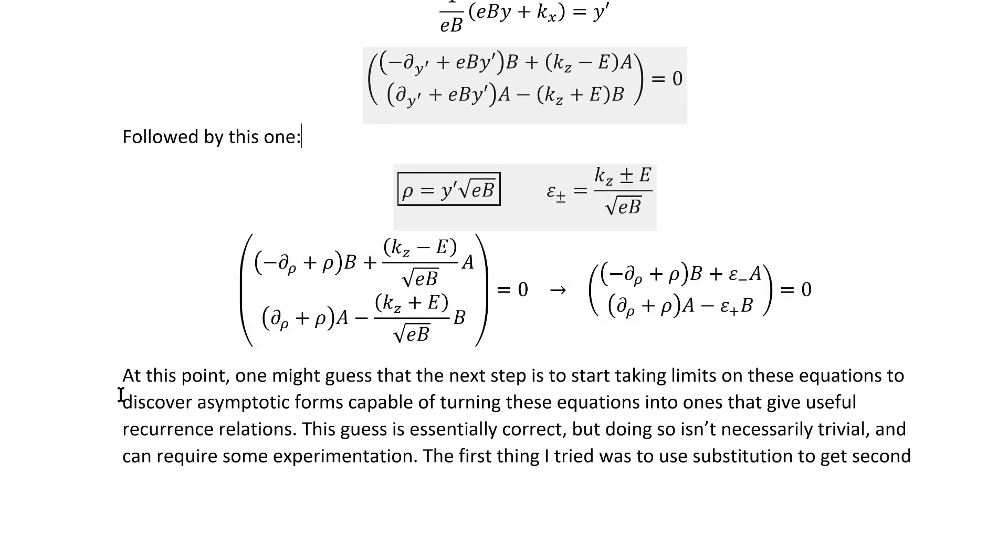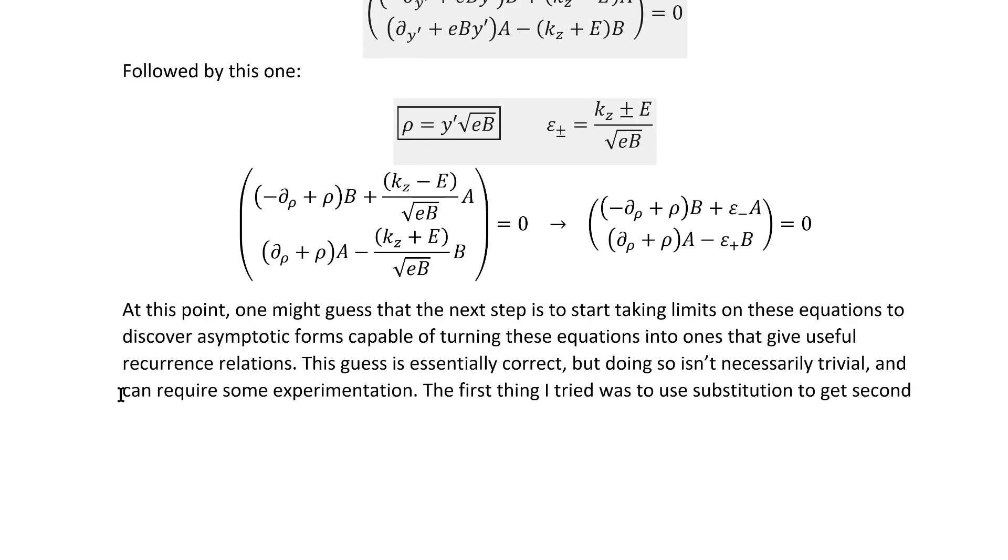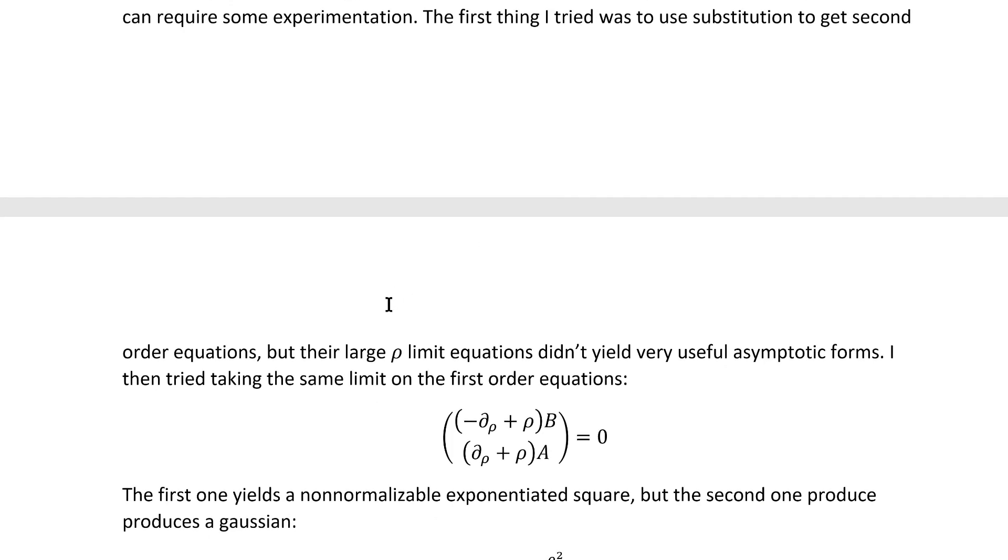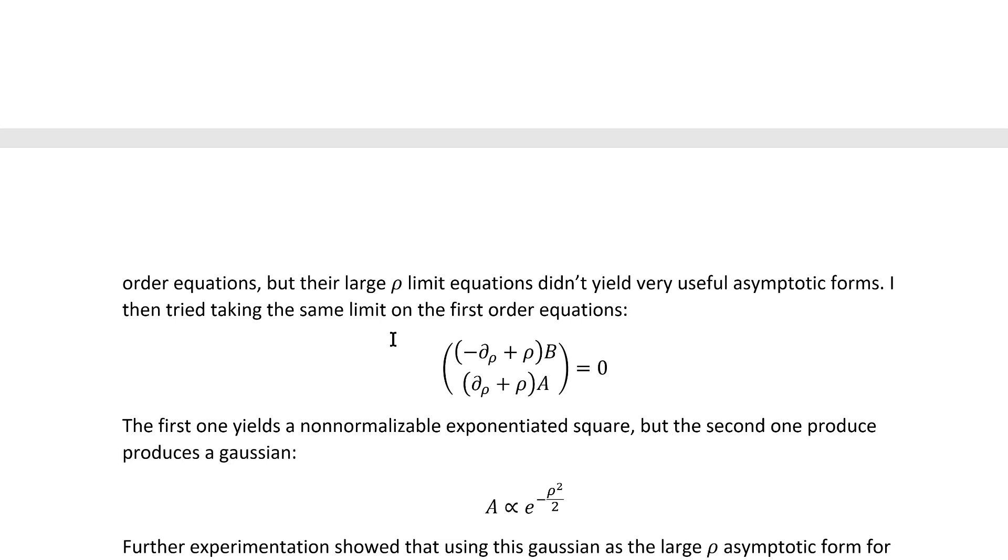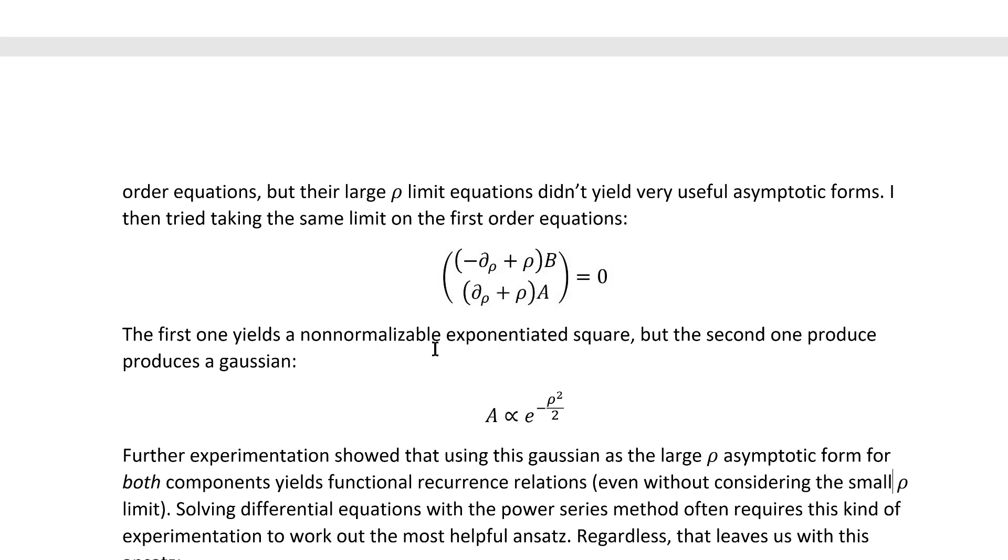At this point, one might guess that the next step is to start taking limits on these equations to discover asymptotic forms capable of turning them into ones that give useful recurrence relations. This guess is essentially correct, but doing so isn't necessarily trivial and can require some experimentation, at least in general, and that was the case here. The first thing I tried was to use substitution to get second-order equations, but their large ρ limit equations didn't yield very useful asymptotic forms. I then tried taking the same limit on the first-order equations, and I got two answers, which isn't terribly surprising.